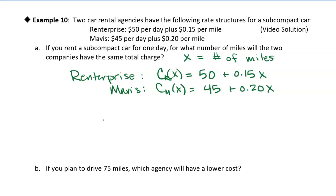So now we have two cost equations, and then we want to know for what number of miles will the two companies cost the same. They'll have the same total charge. So what I'm going to do is just set these costs equal to each other. It's essentially like a substitution. I'm substituting one cost into another. So I'm going to set these costs equal to each other. So I've got 50 plus 0.15x is equal to 45 plus 0.20x.